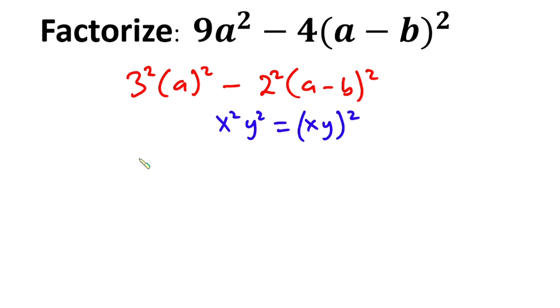So we can write this expression as (3a)² minus (2 times (a - b))².